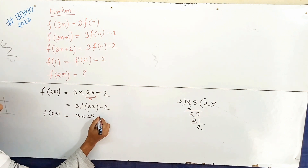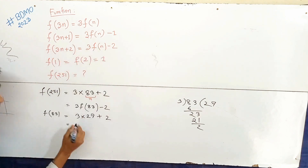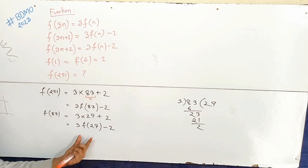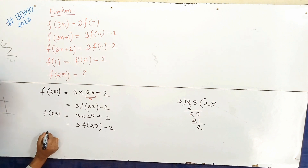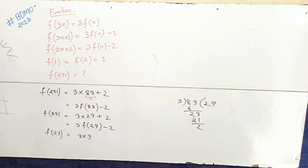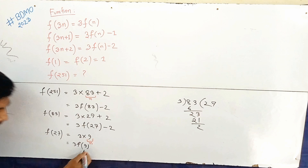So we write 251 = 3(27) + 2 as part of the chain. Then f(3n) - 2, where f(n) = 27, gives 3(27) - 2. To find f(27), we continue the chain downward.